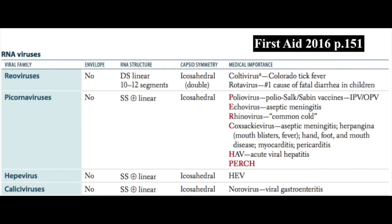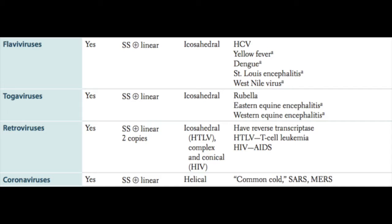The hep-E virus family has a single-stranded plus RNA genome and icosahedral capsid, and the medically important member is hepatitis E virus. Caliciviruses also have a single-stranded plus RNA genome and an icosahedral capsid, and among these are the Norwalk virus, which causes viral gastroenteritis.